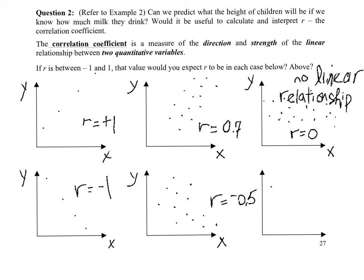This is a non-linear relationship — different from no relationship. There is a relationship here, but it's a curve, not a line. If I tried to fit a line through that data it would be very weak, fitting best around the middle of the data. As before, r will turn out to be 0.